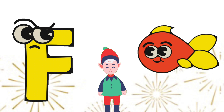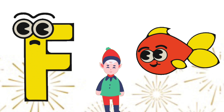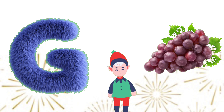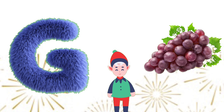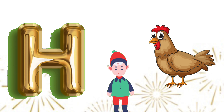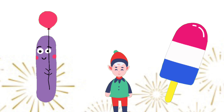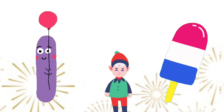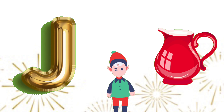F for fish, fish. D for grapes, grapes. H for hen, hen. I for ice cream, ice cream. D for jug, jug.